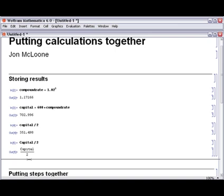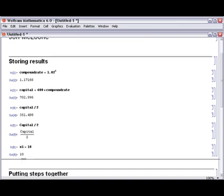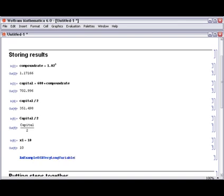You can use any combination of numbers and letters that starts with a letter. For example, the variable x1 is distinct from the variable x or x2. You can use long variable names that are more descriptive of their meaning, and there's no limit to the length of a variable name.